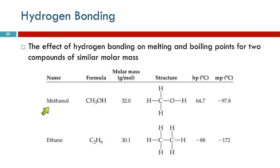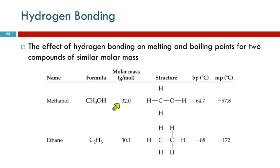Comparing methanol and ethane: ethane is nonpolar and very symmetrical; methanol is polar with a hydrogen-oxygen bond, so it has hydrogen bonding. Their molar masses are really similar, but methanol boils at positive 64°C while ethane boils at minus 88°C — a huge difference. Both have dispersion forces, but methanol also has dipole-dipole forces and hydrogen bonding.